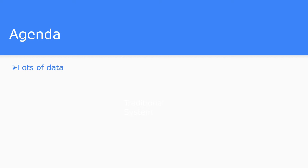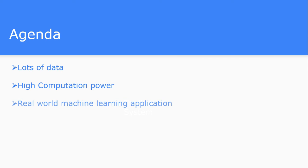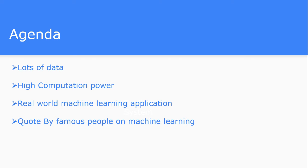Let's see the main focus areas. First of all, there is lots of data. We'll discuss in more detail: very high computation power, real-world machine learning applications, how Google, Microsoft, Facebook, and Apple are using machine learning for their internal products, some famous quotes by people on machine learning, and at the end we'll see what the possible future of machine learning could be.